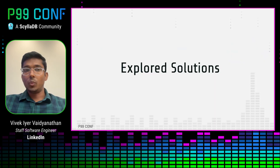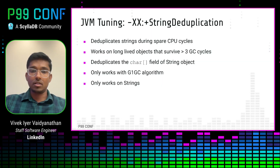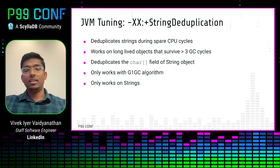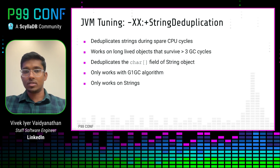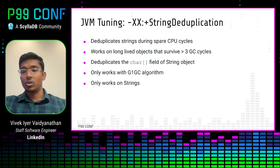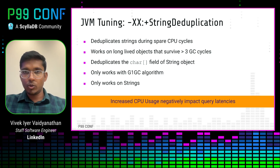Let's look at the various solutions we explored and which one we finally settled on. The first solution was JVM string deduplication. This instructs the JVM to optimize heap allocation for identical strings when there are spare CPU cycles, and only optimizes long-lived objects that survive three GC cycles — fine for our long-lived dictionary column buffer. However, this technique only deduplicates the character field of the string object, wasting the remaining 24 bytes per object, only works with the G1 GC algorithm, and only works on strings. We tried this approach but results were not satisfactory — it increased CPU usage on our server hosts, negatively impacting query latencies, so we did not go with it.